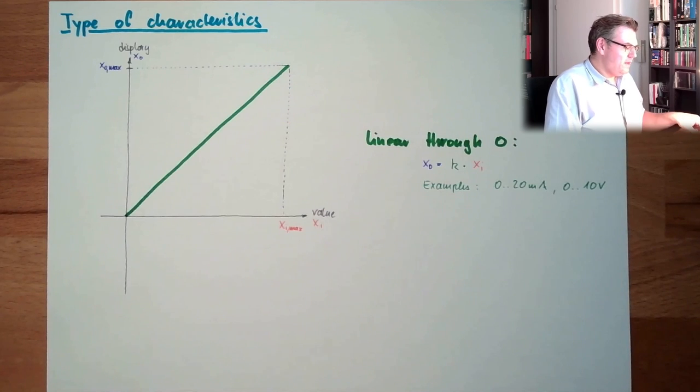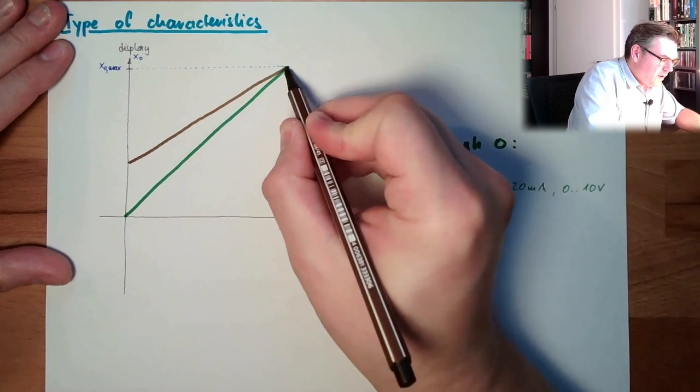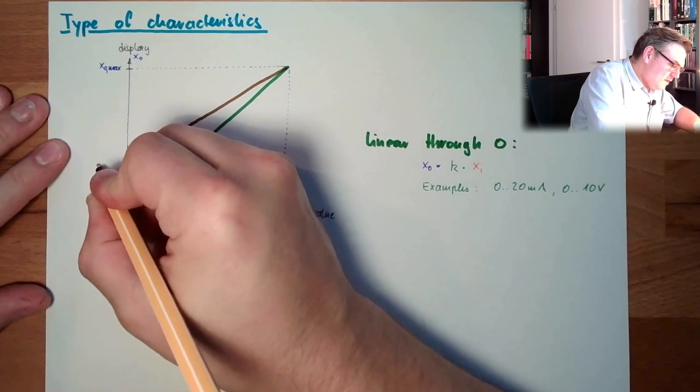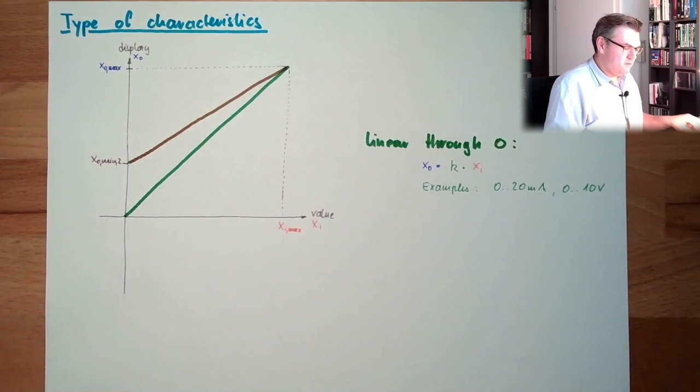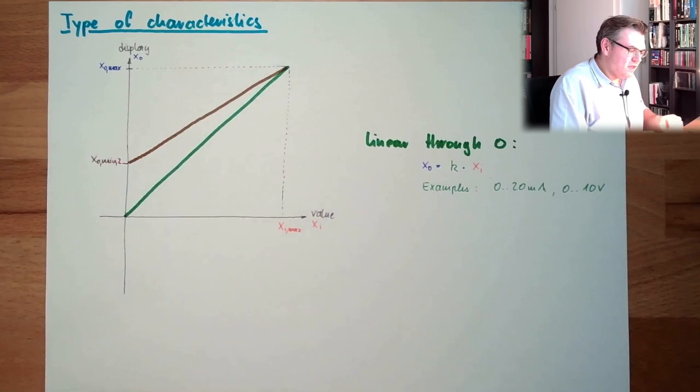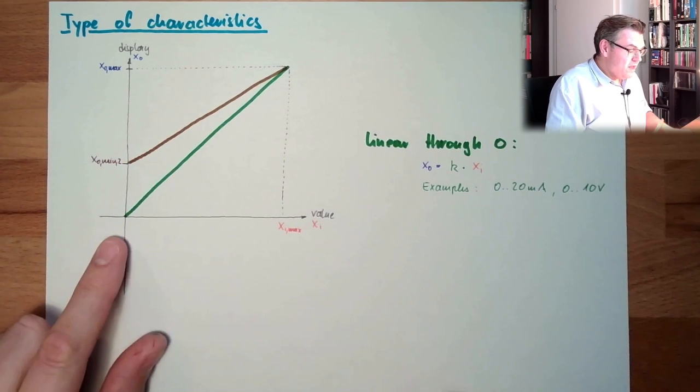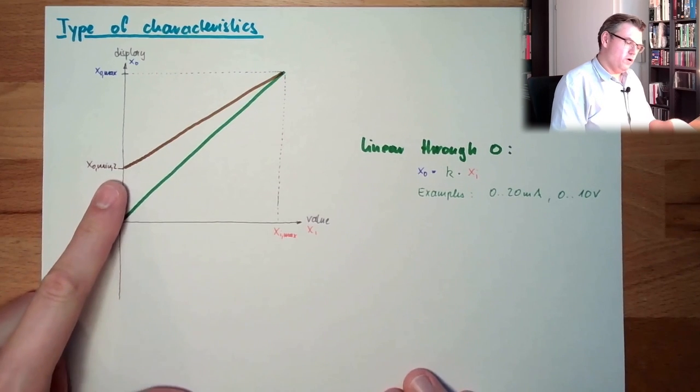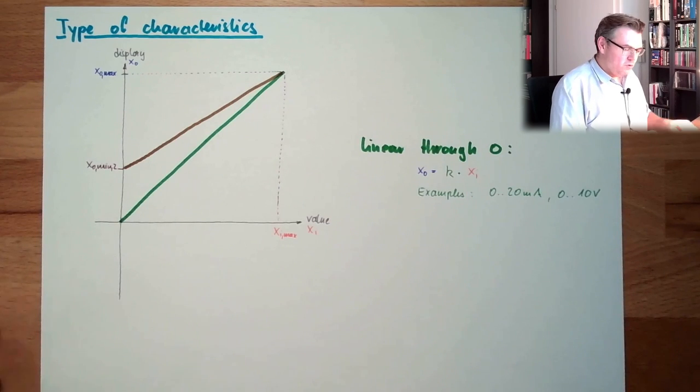Then there's also the possibility, which looks like that, linear. But here we start at a certain position already, and going up. So here we have an offset, here. This is XO min 2, the second. The sensitivity is less, because K is less. It's always the same, however, if we have zero measurement, we already have an output. So if there is zero measurement, the output is already alive. And this is why it's called life zero.